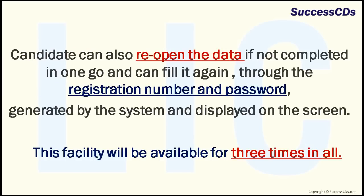In the event of the candidate not being able to fill the data in one go, the candidate can save the data already entered. When the data is saved, a registration number and password will be generated by the system and displayed on the screen. The candidate must note down the registration number and password. An email and SMS indicating the registration number and password will also be sent. They can reopen the same data using the registration number and password and edit the particulars if needed. This facility will be available 3 times.